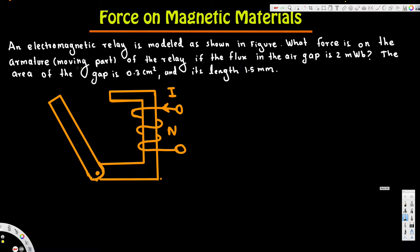Okay, let's look at this problem. The question is asking: an electromagnetic relay is modeled as shown in the figure. What force is on the armature of the relay if the flux in the air gap is 2 milliweber, the area of the gap is 0.3 centimeter square, and its length is 1.5 millimeter?